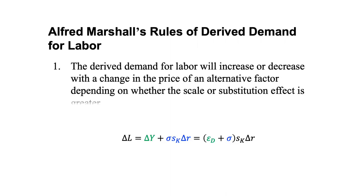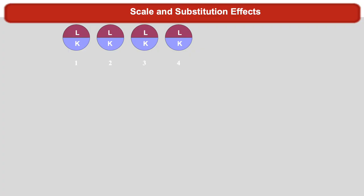We focus on the first law: does making capital cheaper, represented by a negative delta r, increase or decrease the demand for labor? It depends on the relative scale and substitution effects. I put the scale effect in green and the substitution effect in blue. They have opposite signs because the factor substitution elasticity is positive, while the slope of the final demand curve is negative. First I showed you the geometry and then the algebra — here's a third way of looking at the same thing.